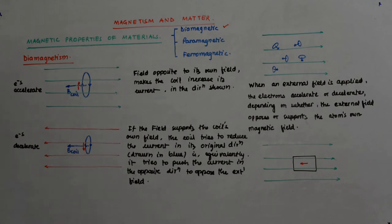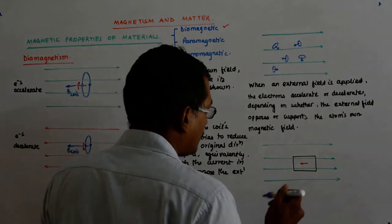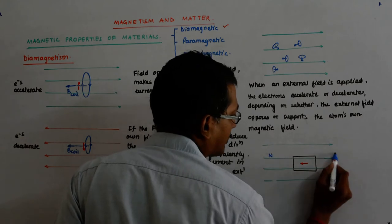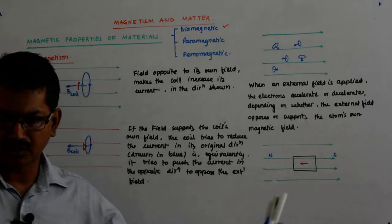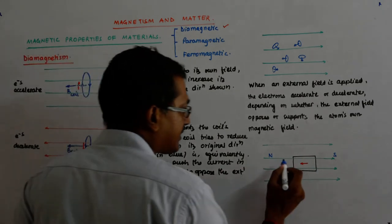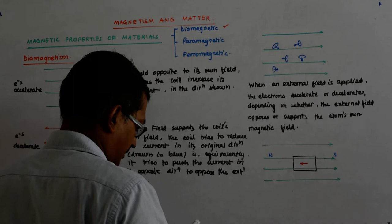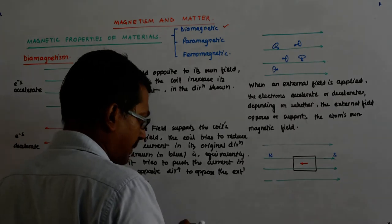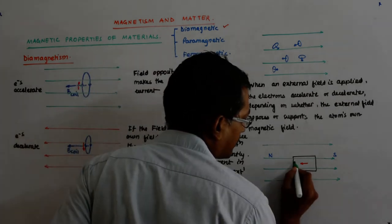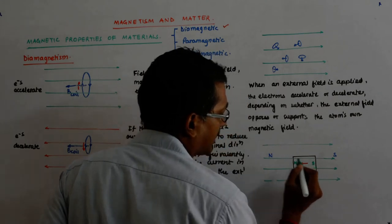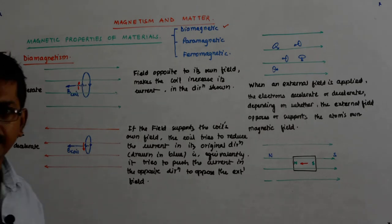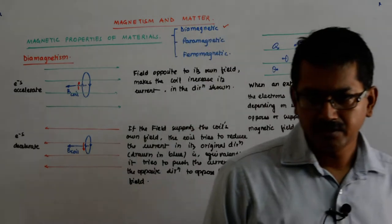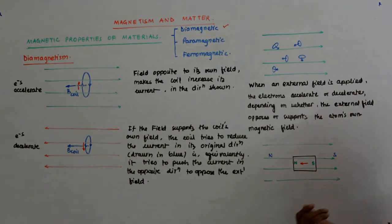This responds by generating its own magnetic field like that. So for you, this is the north pole and this is the south — because your lines are originating from north and going to south. While for our material, this becomes our north pole and this becomes our south pole. So it will start getting repelled in the magnetic field.